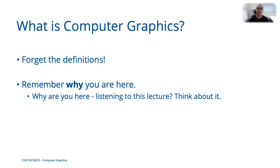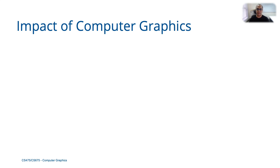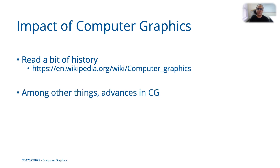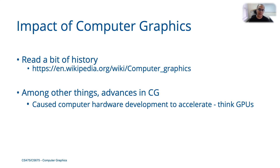Just a brief note on the impact of computer graphics on the world around us. We should have a historical context to figure out where this field comes from. I would strongly encourage you to read the Wikipedia page which has a fairly detailed description about the historical underpinnings of computer graphics. To list a few things that have happened because of advances in computer graphics: obviously you have got better movies, better visualization, better design, better special effects, better games — all those things go without saying.